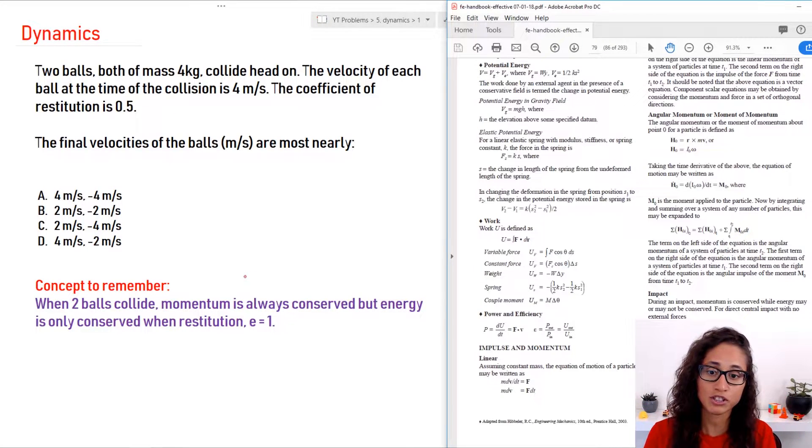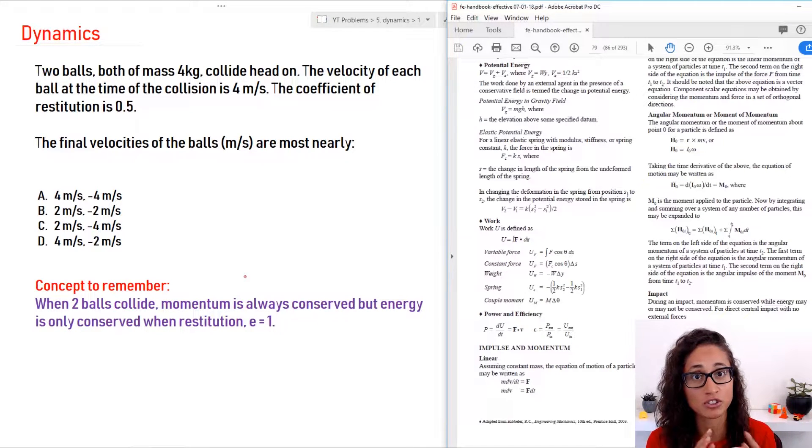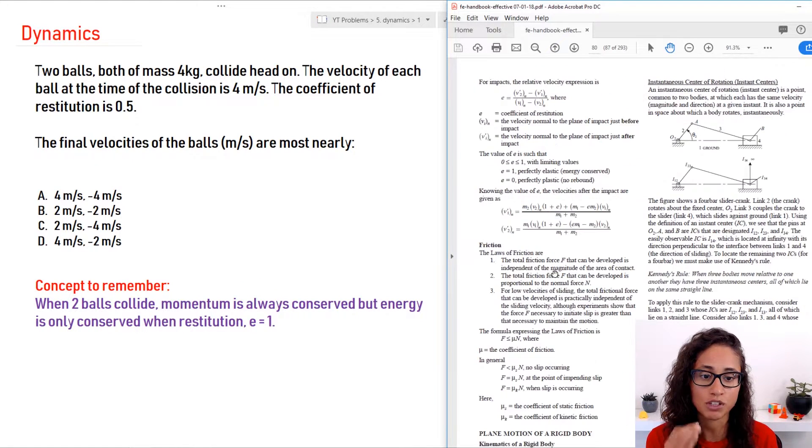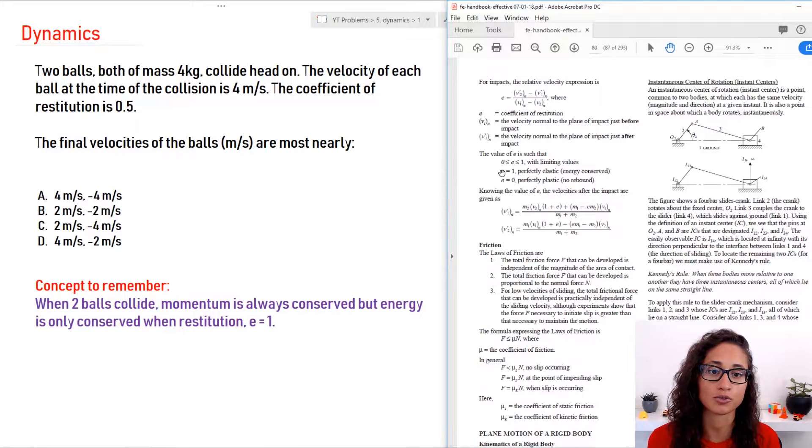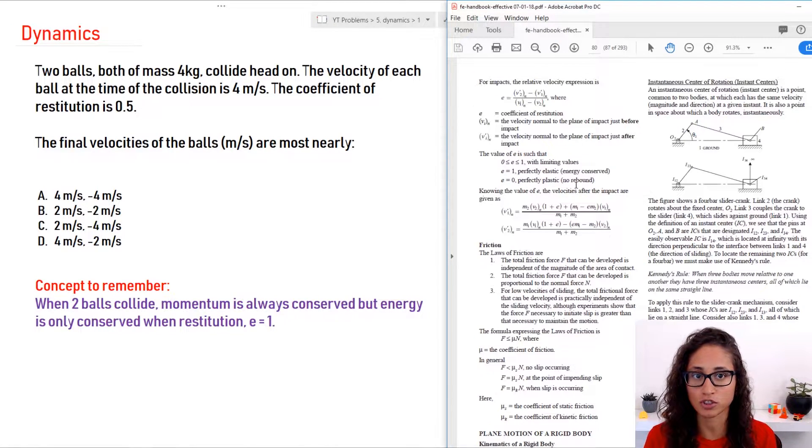So I put here some concepts, very important to remember, because sometimes they actually give this as a conceptual question. When two balls collide, just remember momentum is always conserved, but energy is only conserved when the restitution E is equal to 1. If you go to page 80, they actually tell you if E equals 1, which is the restitution, you have energy conserved because we have perfectly elastic.